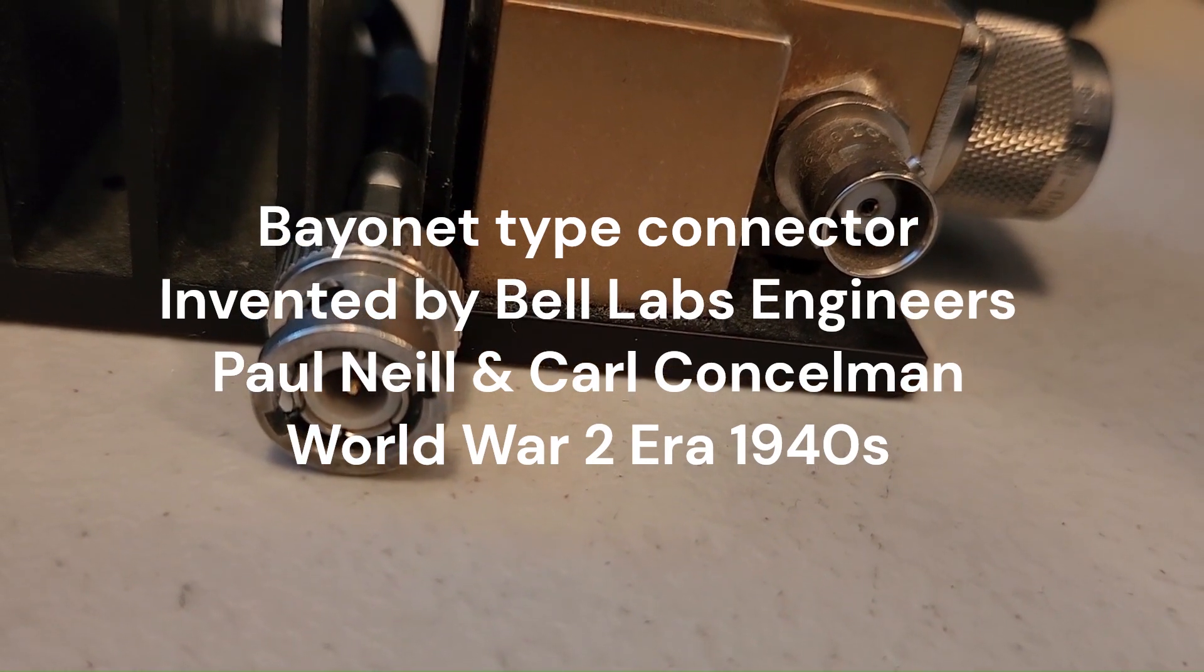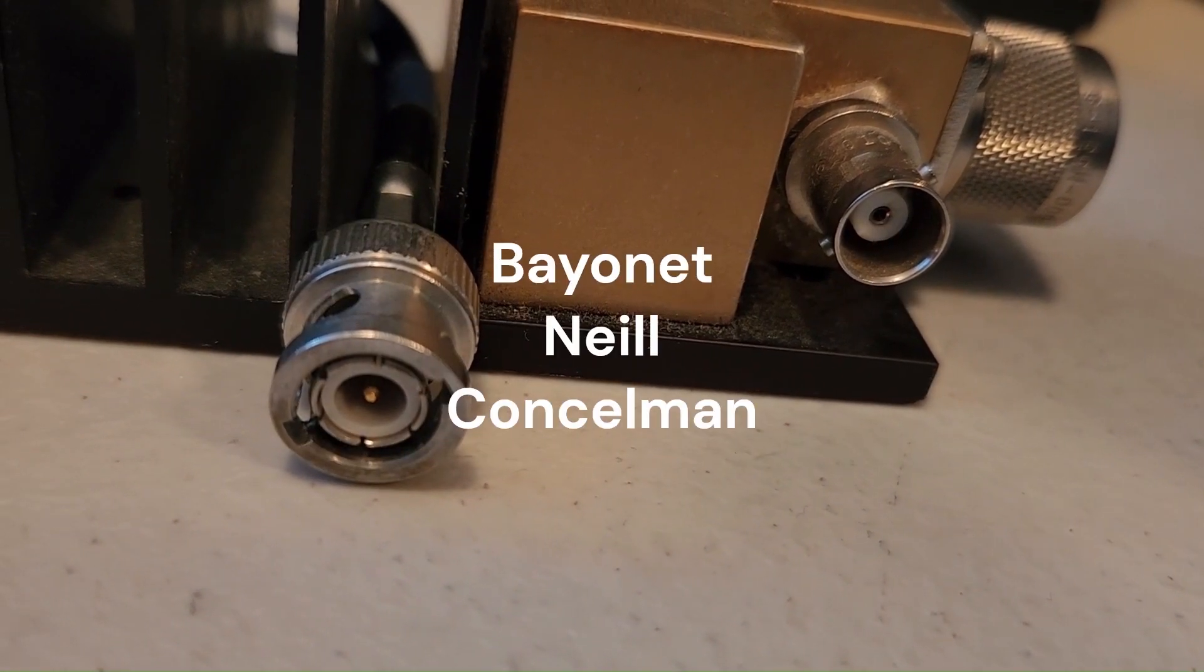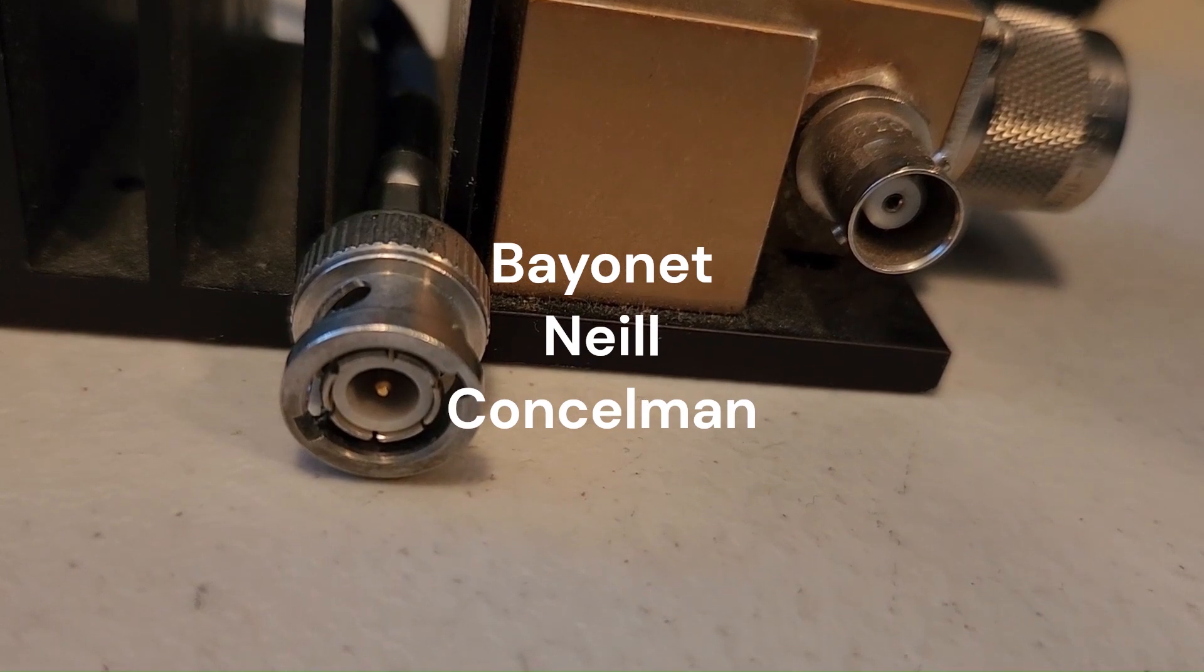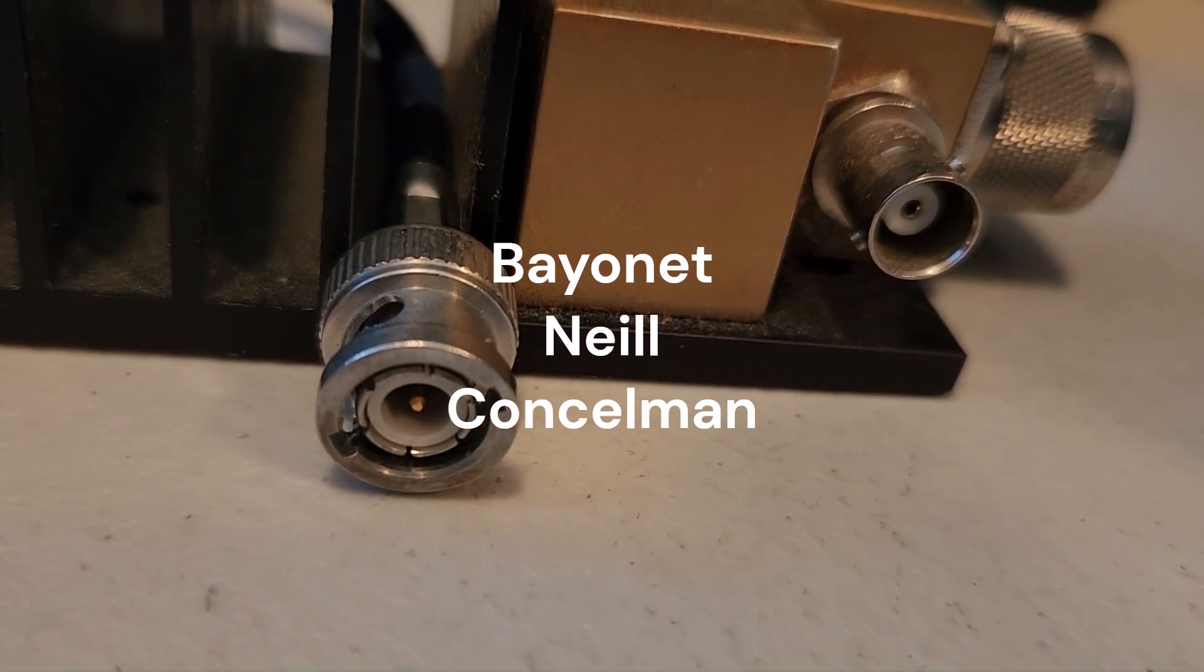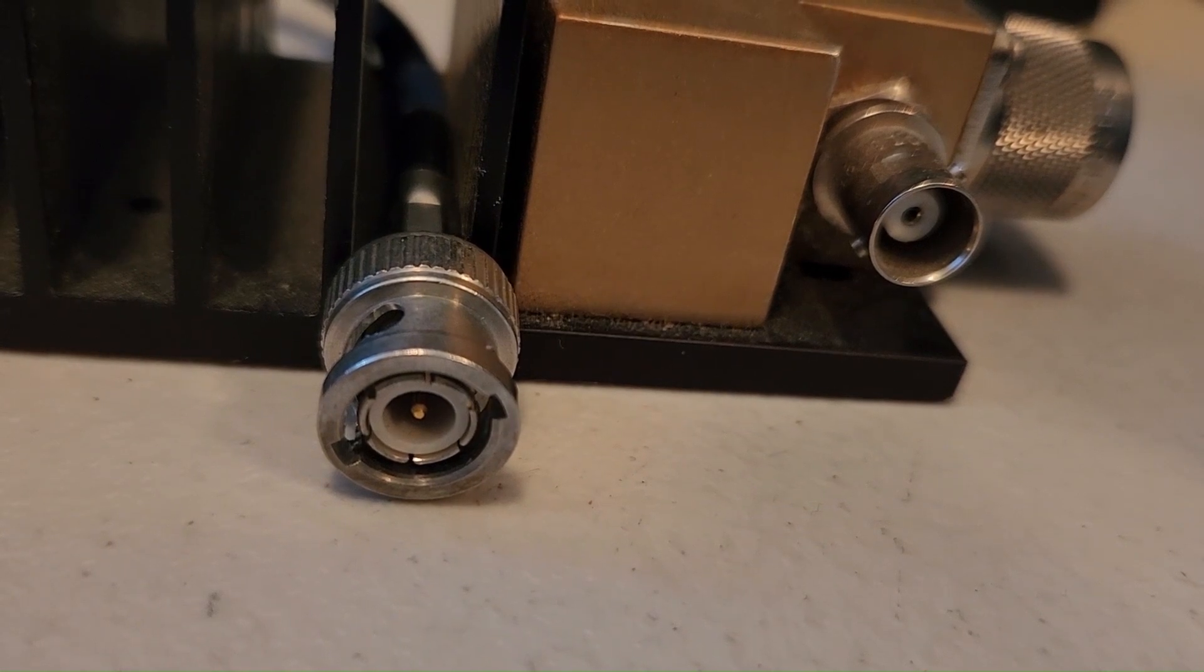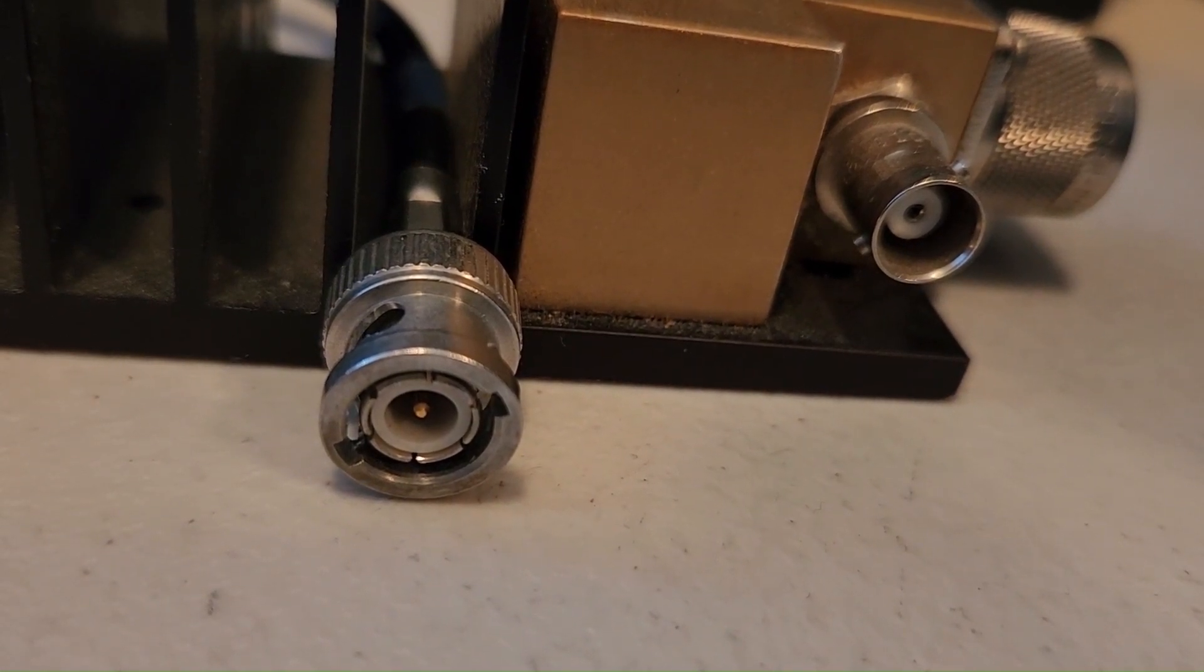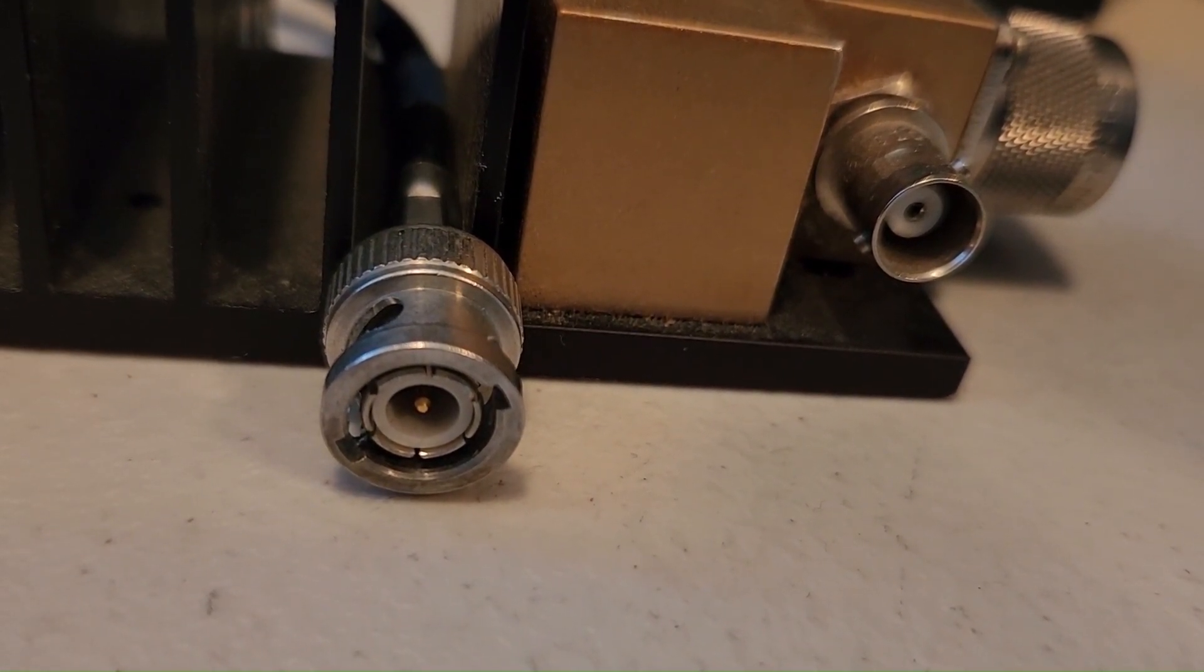It is a Bayonet type connector. The inventors involved were Paul Neal, the same inventor of the type N connector, and Carl Consulman. So the BNC stands for Bayonet Neal Consulman. Many think the C stands for connector but it actually stands for Consulman. So it's a Bayonet type connector named after its two inventors.